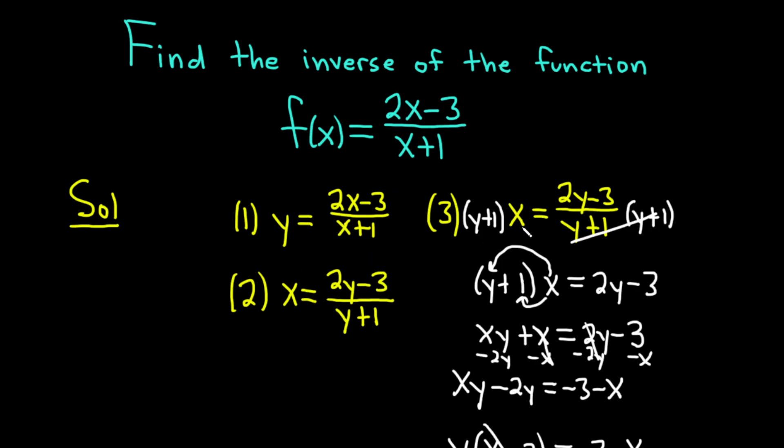And then in step 3, we actually have to solve for y. And that's really the hardest part of this problem. So we have a y down here. So we multiplied both sides by y plus 1 to clear the fractions. Then when we got here, we decided to distribute the x. So x times y is xy. x times 1 is x. And then we get here, xy plus x equals 2y minus 3.